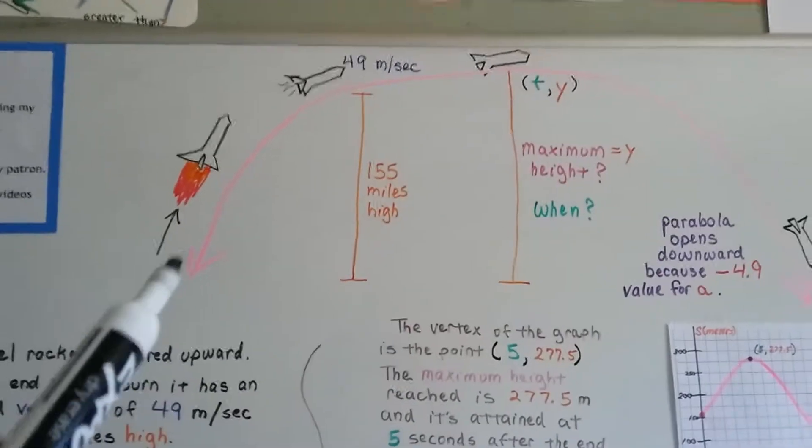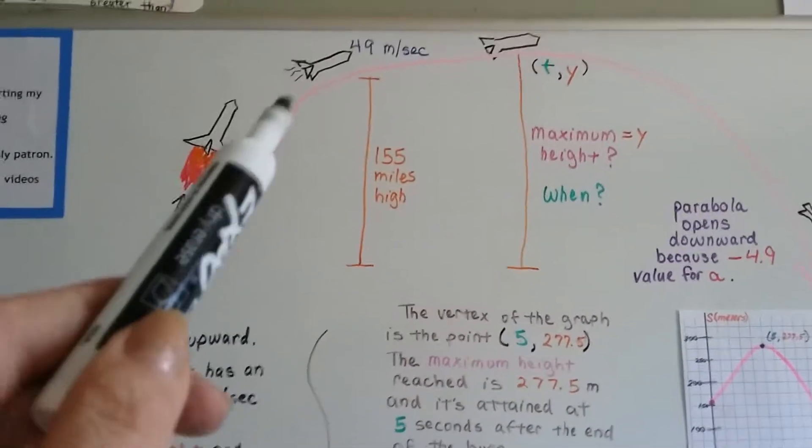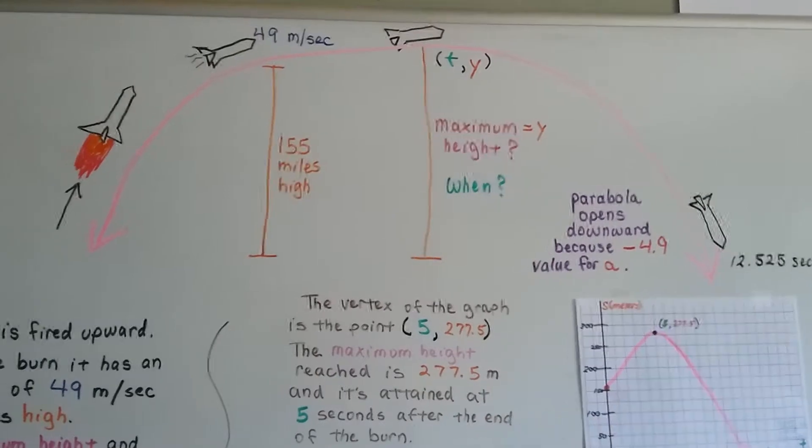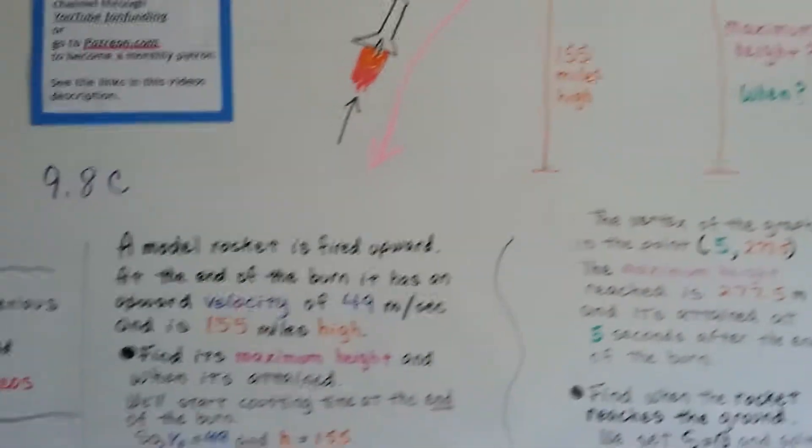Let me show you my drawing real quick here. We have a rocket. It's got a burn. The burn stops, and then it's going to fall to the ground.